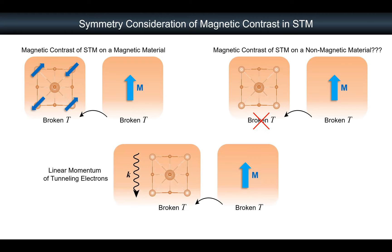Whenever you perform STM — scanning tunneling microscopy — you flow electric current tunneling up and down. We have to take into account this tunneling electron, represented by K, the linear momentum of electrons. That is a weird situation, because K — being a derivative with respect to time — is broken about time-reversal symmetry. So on the left side we have broken time-reversal symmetry. It sounds like we should always have magnetic contrast. That's weird.